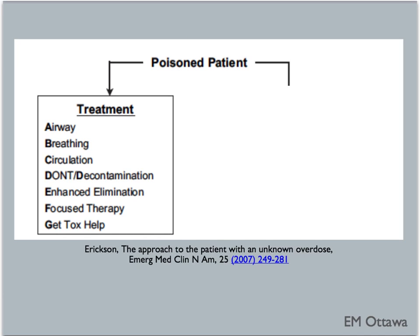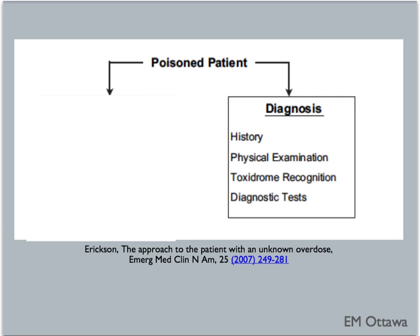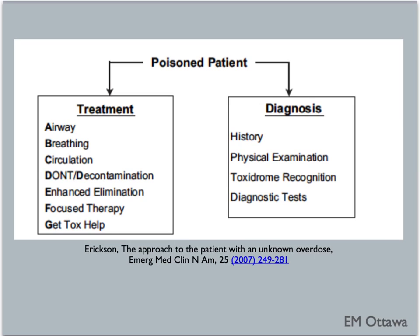In this video, we discussed the simultaneous approach of treatment and diagnosis of the poisoned patient. In the treatment arm, we have ABC, DON'T, enhance elimination, focused therapy or specific antidote, and to get tox help. In the diagnosis arm, we have history, physical examination, toxidrome recognition, and diagnostic tests. We hope this video will help you look after your next poisoned patient. In the antidote video, we will also be revisiting these concepts as well.